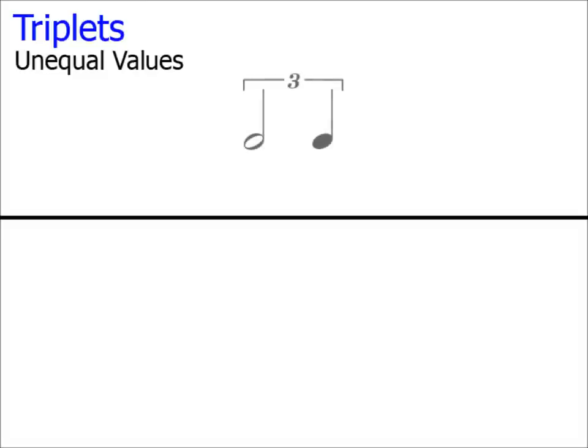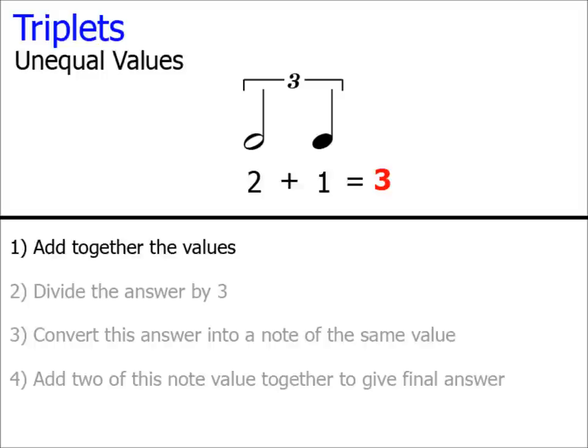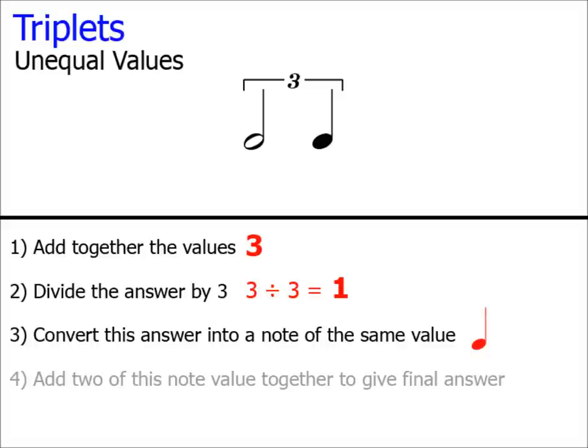Let's try another example. There are just two notes here but they have different values. Here's our list of instructions and we'll start by following instruction number 1. Add together the values. So 2 for the minim plus 1 for the crotchet equals 3. Make a note of this. Step 2, divide your answer by 3. So 3 divided by 3 equals 1. Step 3, we convert this answer into a note of the same value. So as our answer is 1, the note which has a value of 1 is a crotchet or quarter note.